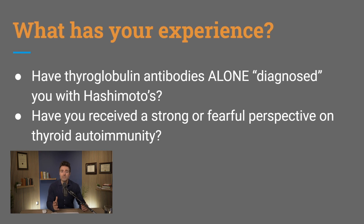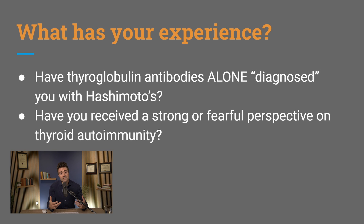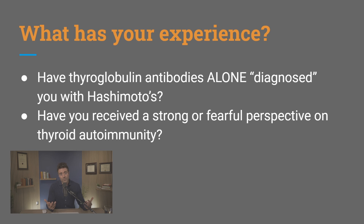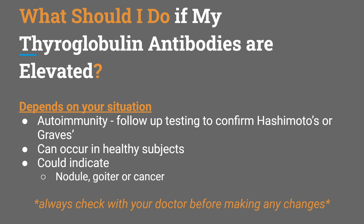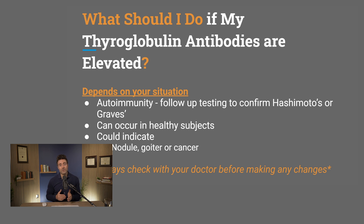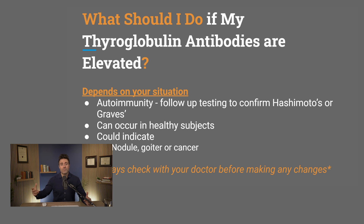But before we go there, I'm curious to hear in the comments — have you had this marker tested? Was it positive? If it was positive, what were you told? So regarding thyroglobulin testing — as it pertains to autoimmunity, a positive thyroglobulin is not diagnostic alone, in and of itself, for Hashimoto's or for Graves. You want a correlation study with TPO for Hashimoto's, plus ultrasound, or thyroid receptor antibody for Graves, plus ultrasound. The ultrasound gives you a visual representation of what the thyroid tissue actually looks like.